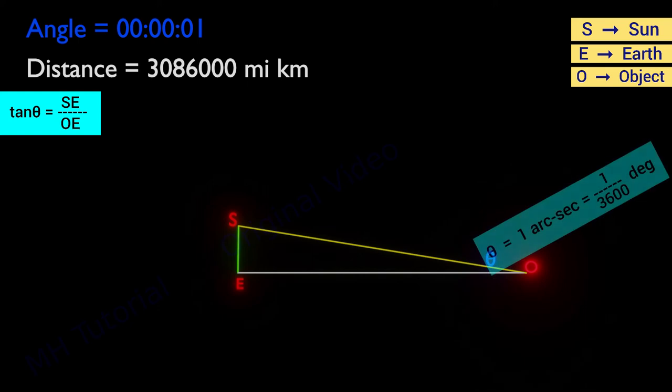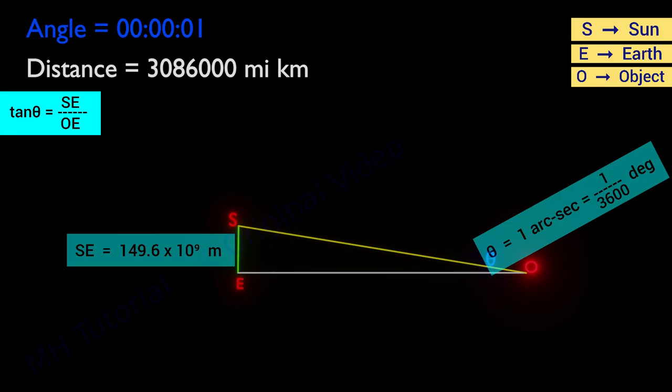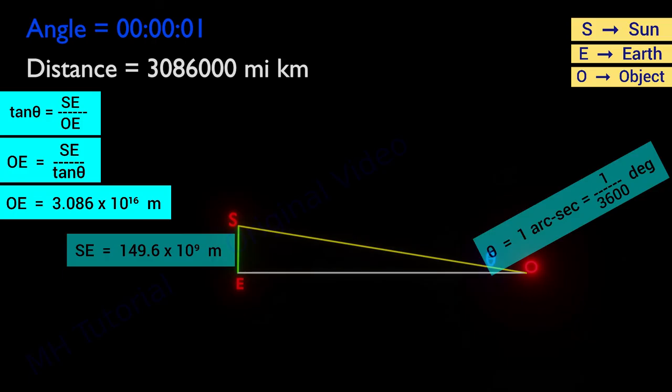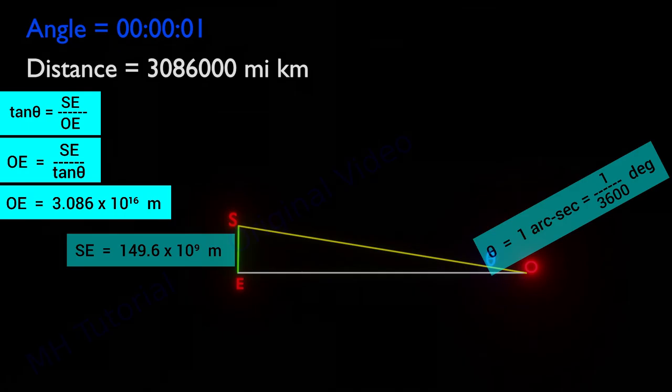In this very case, the theta is 1 arc second and distance SA is 149.6 million kilometers. After putting values of theta and distance SA, we should get 1 parsec equal to 3.086 into 10 to the power 16 meters.